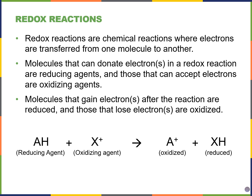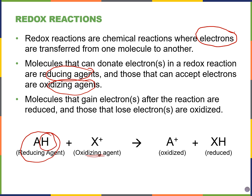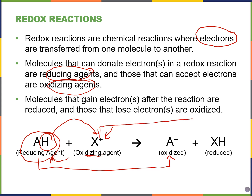Redox reactions are chemical reactions where we transfer electrons between molecules. Reducing agents donate electrons to someone else — so they reduce someone else, and thereby become oxidized. Oxidizing agents accept electrons and thereby become reduced. So AH is a reducing agent — it reduces the oxidizing agent by transferring electrons to it, and after doing so becomes oxidized. Meanwhile the oxidizing agent becomes reduced.